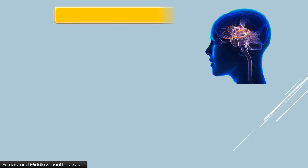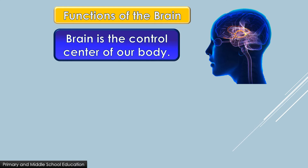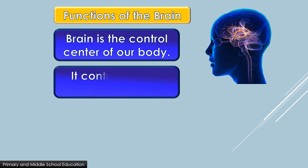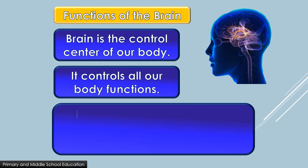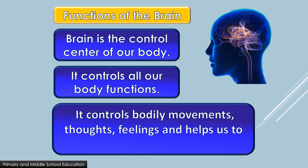Now let us know about the functions of the brain. Brain is the control center of our body. It controls all our body functions — bodily movements, thoughts, feelings — and helps us to remember things.